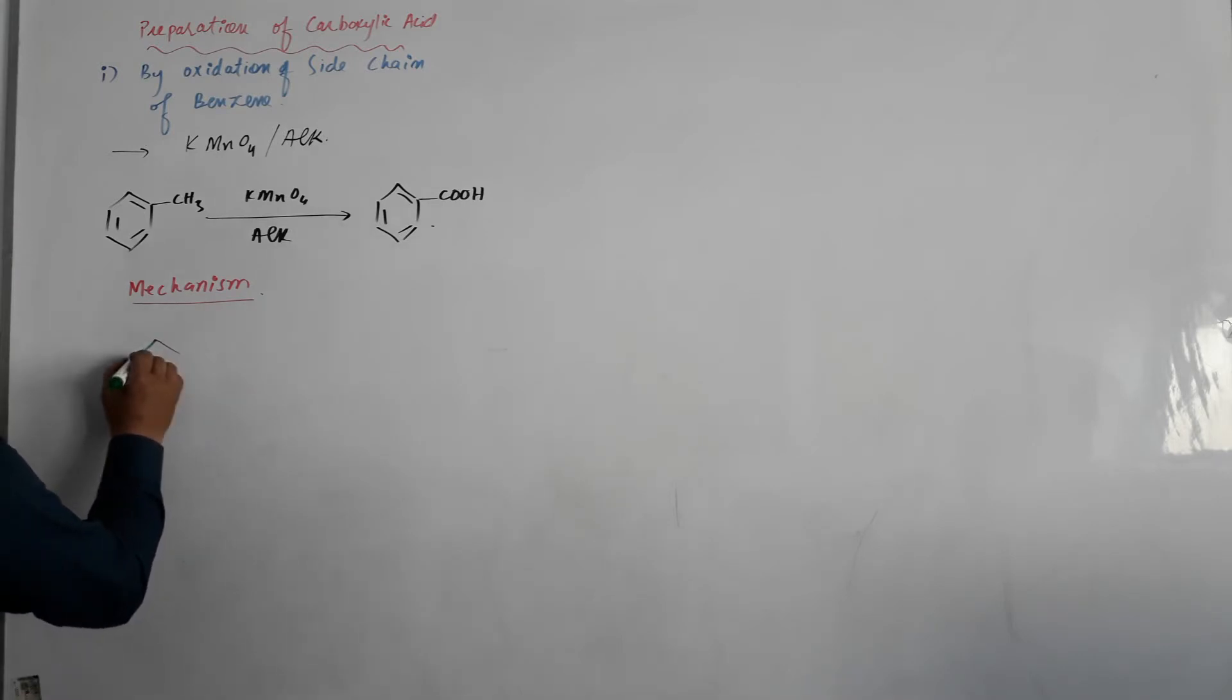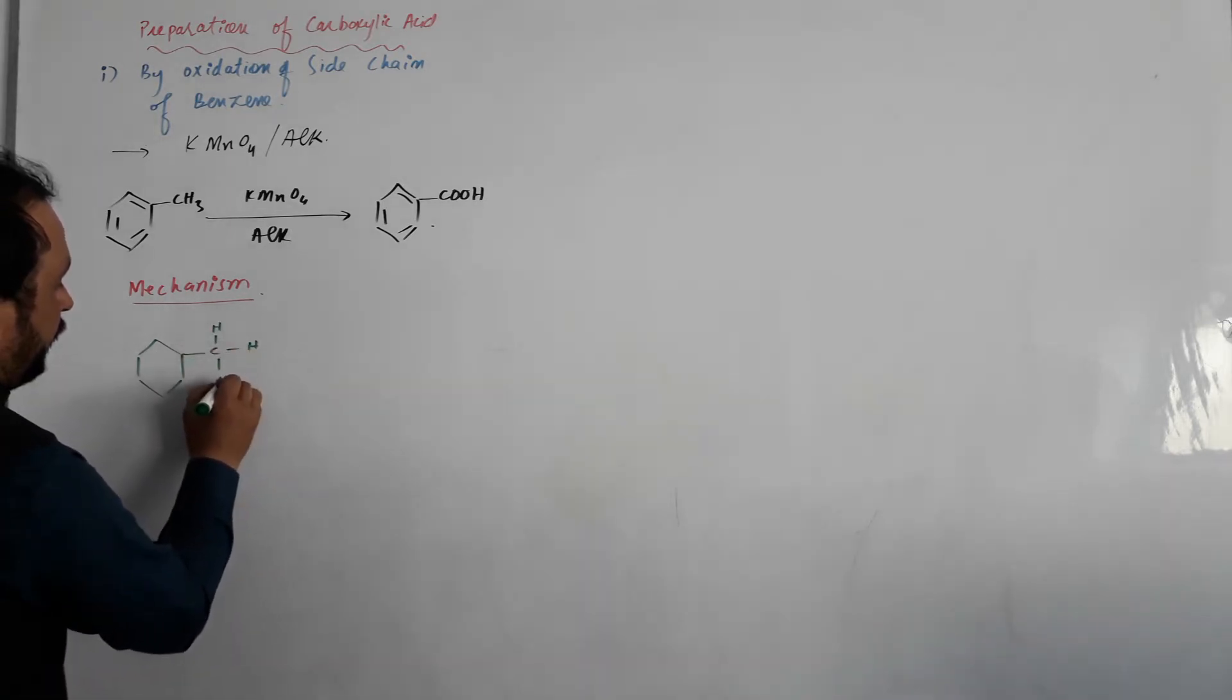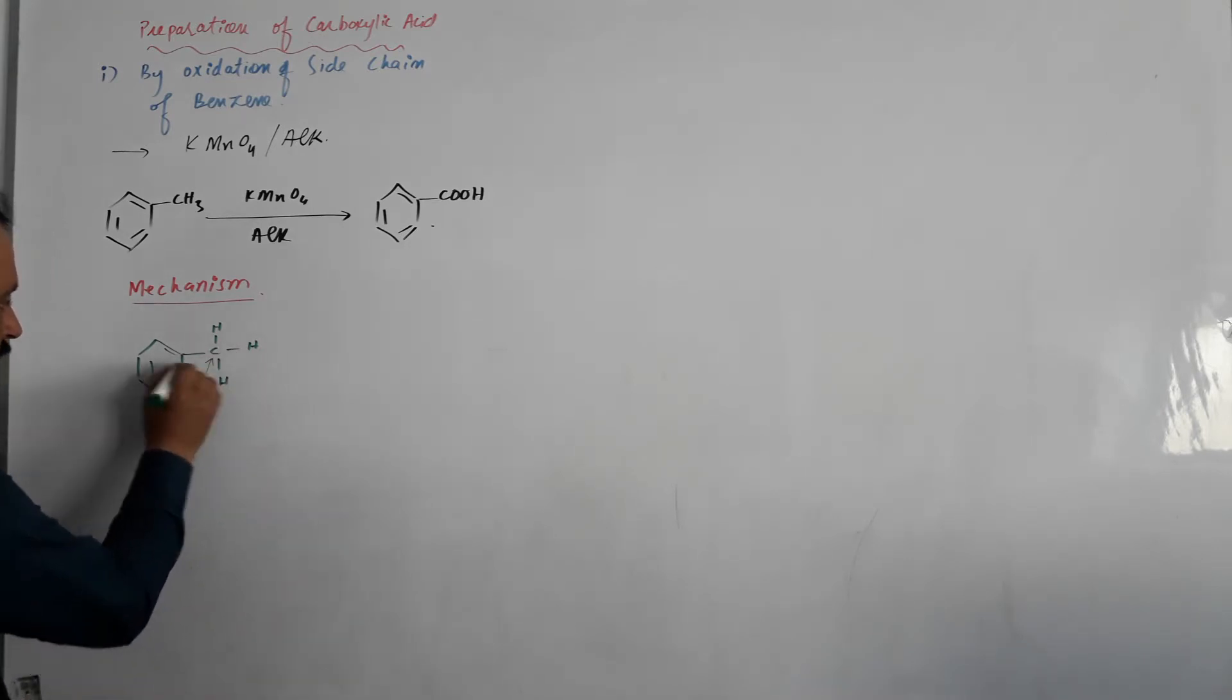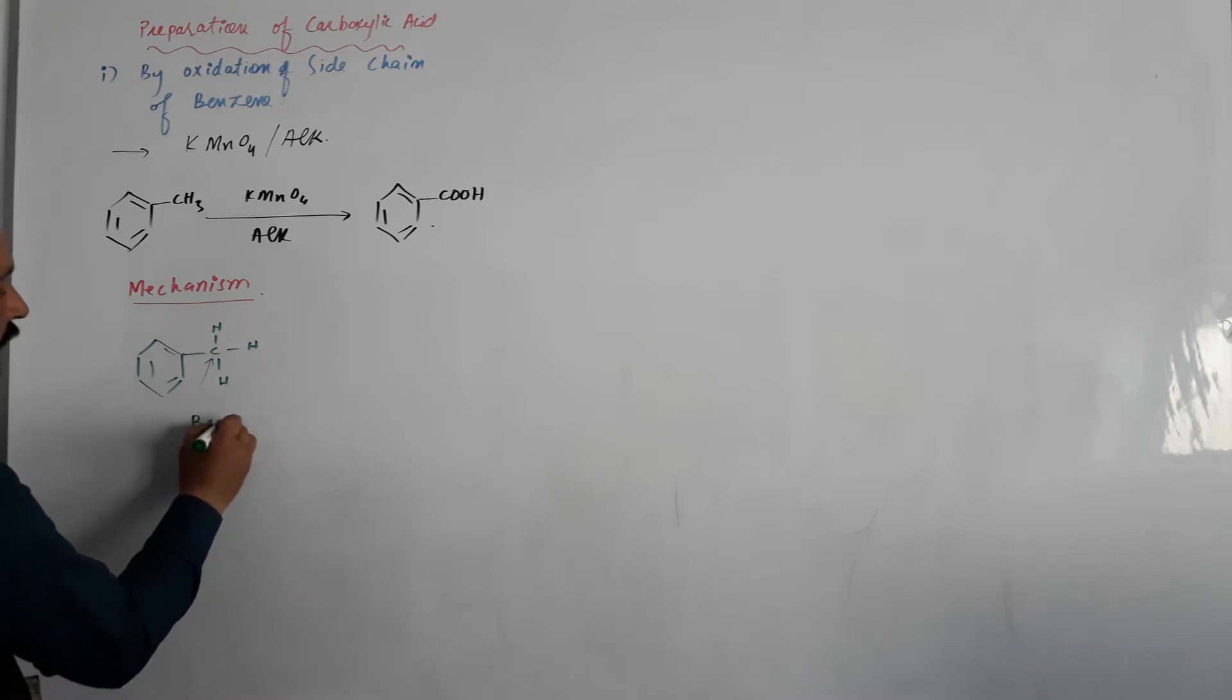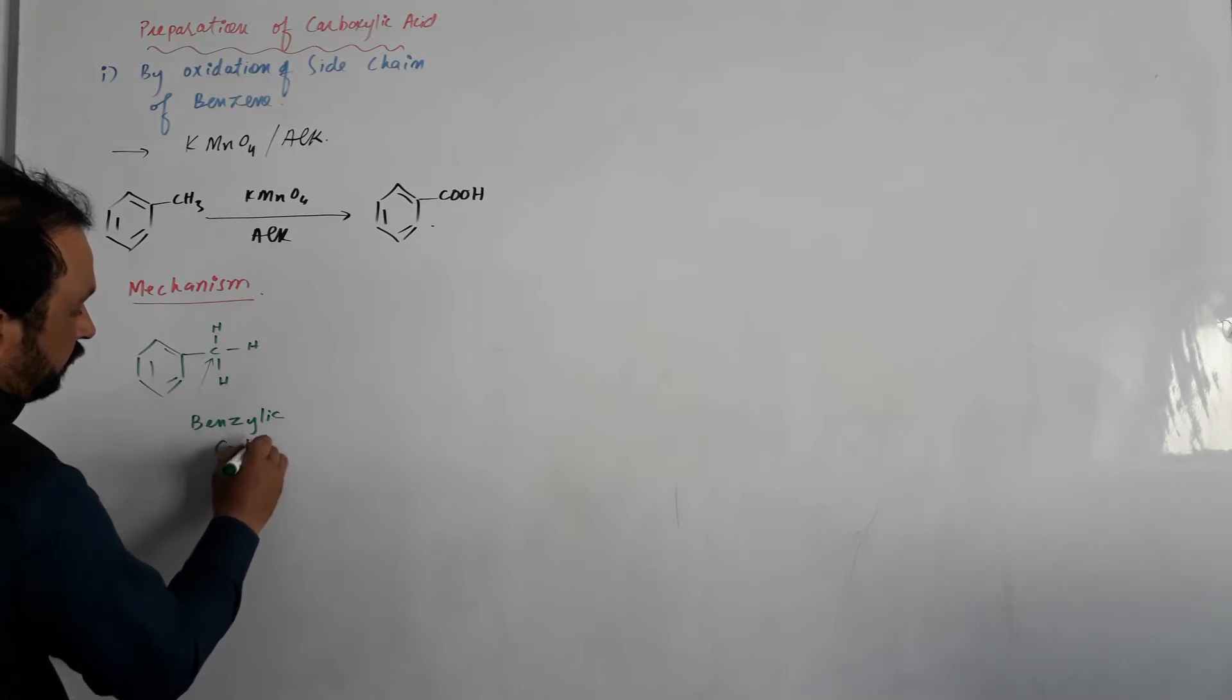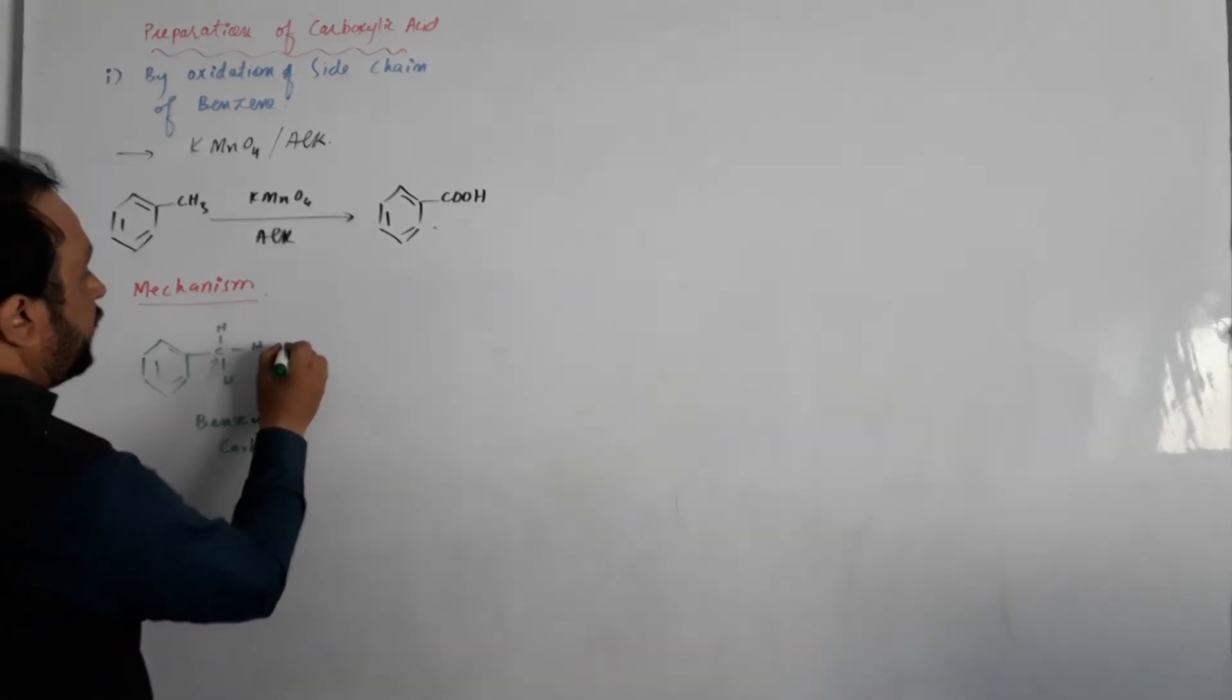The bond between the hydrogen and carbon in the methyl group is weak. The carbon directly attached to the benzene ring is known as benzylic carbon, and the hydrogen attached to this carbon is weak.